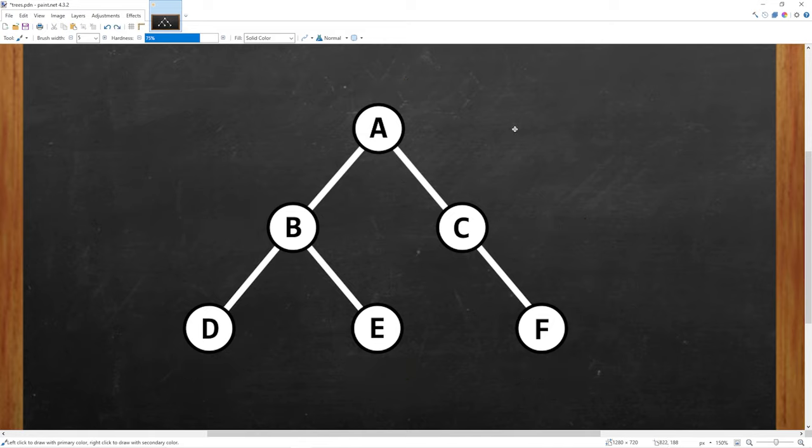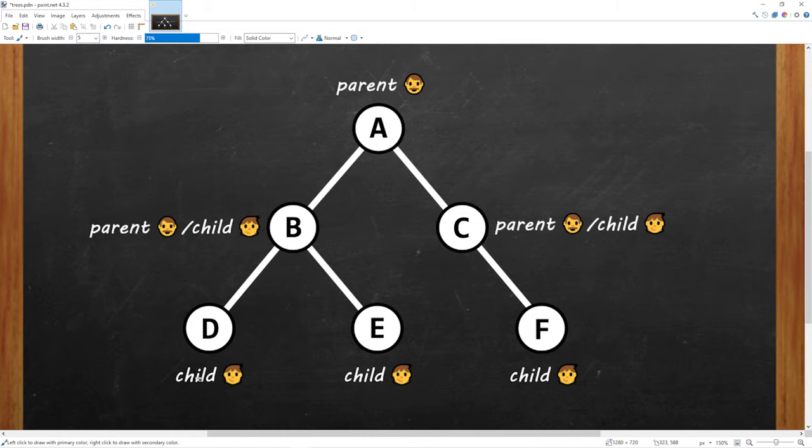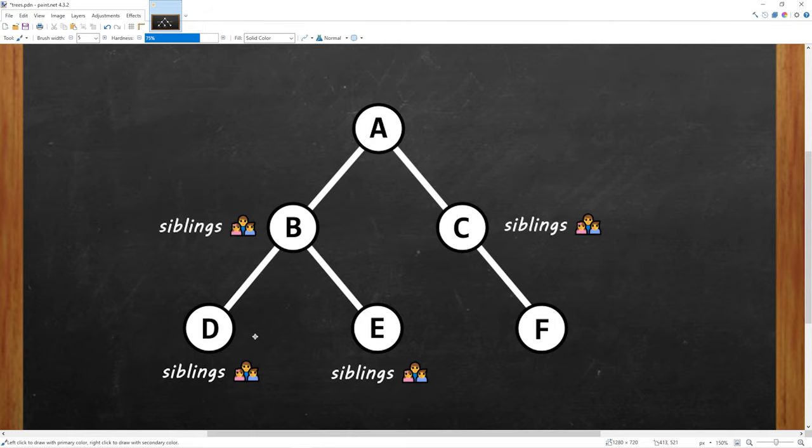Here's a few other terms. Any nodes with outgoing edges are also known as parents. Any node with an incoming edge is known as a child node. And nodes can be both parents and children if they have both incoming and outgoing nodes. Any two children that share the same parent are known as siblings.